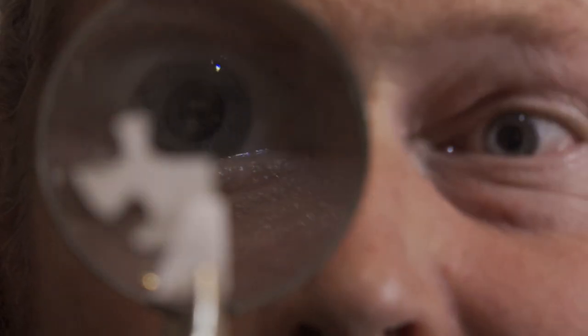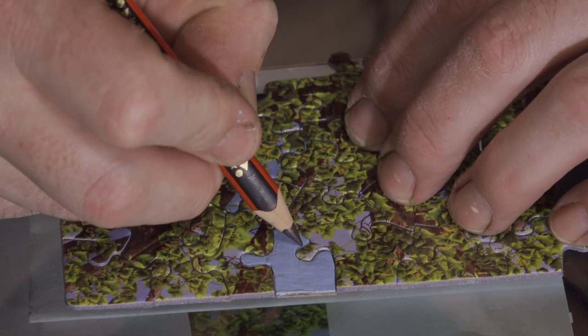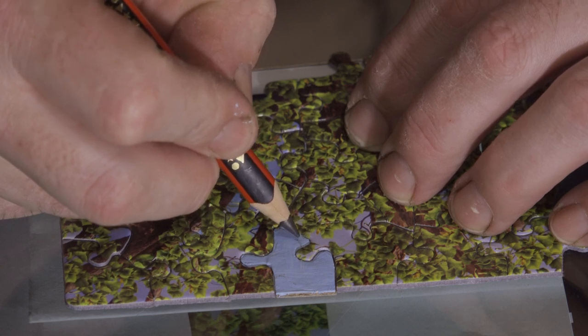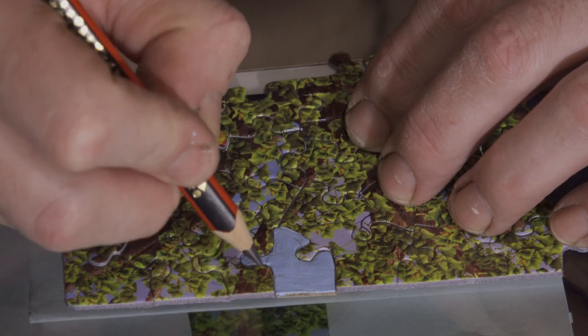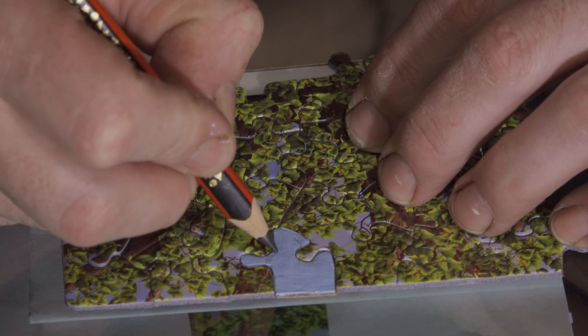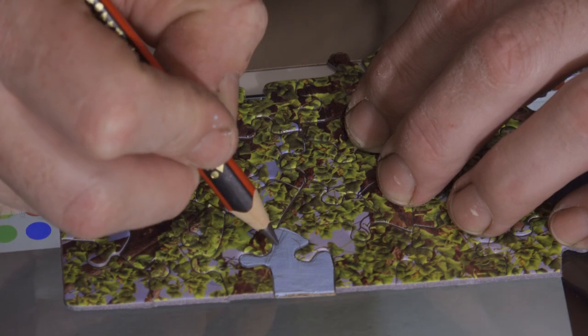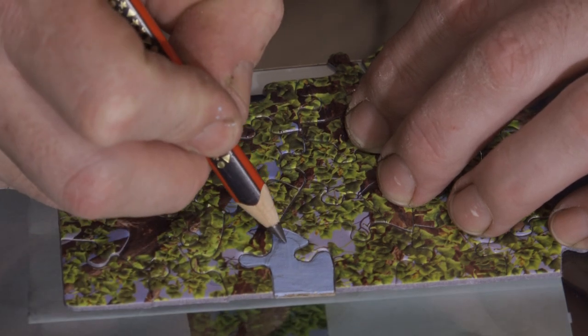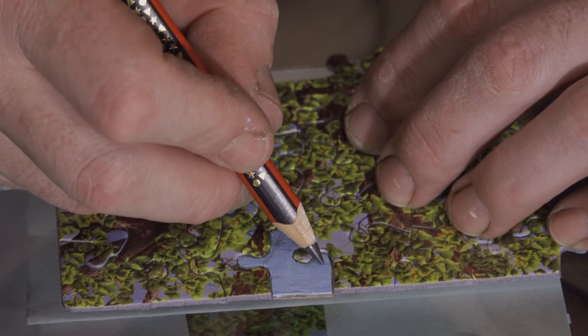Time for a few details. I've got to stencil out the missing part, so I'll put the puzzle piece I made into there and just slightly draw the design with a pencil. And this will ensure that I'll put the paint in the correct spots, or thereabouts anyway.